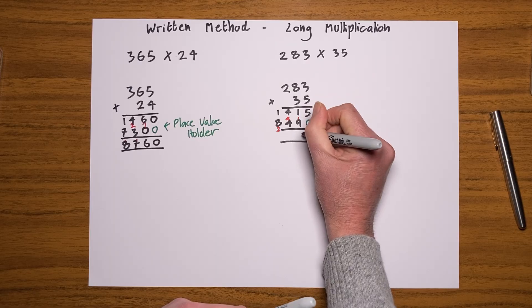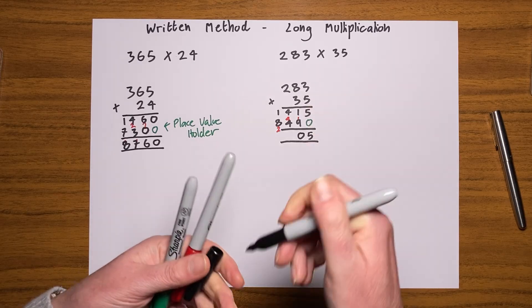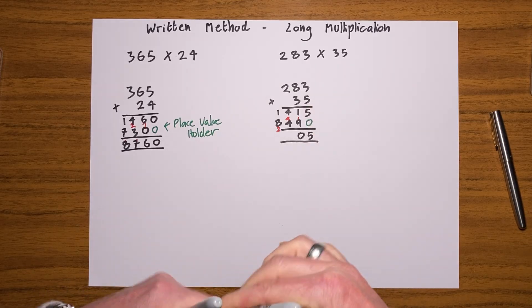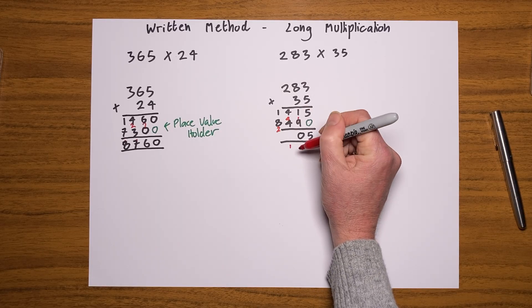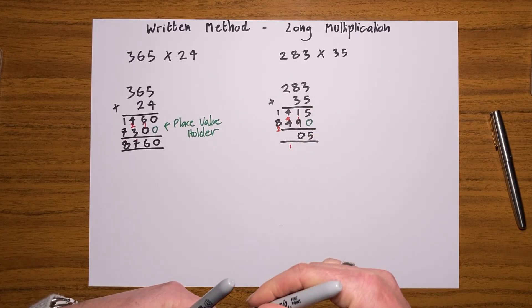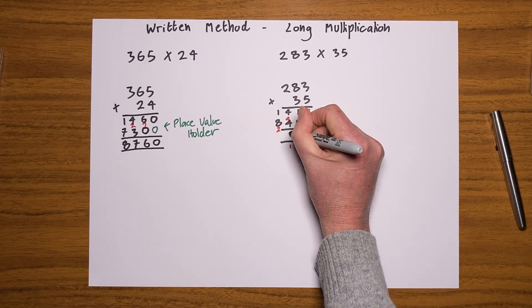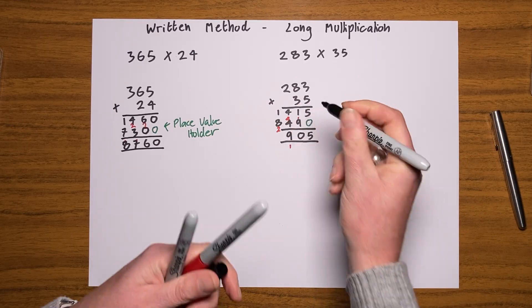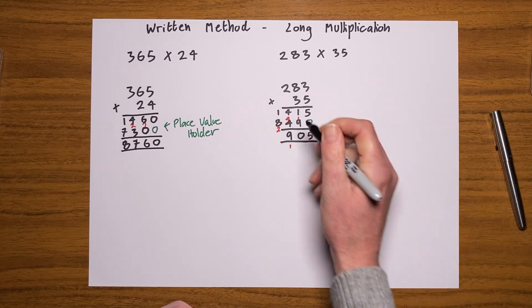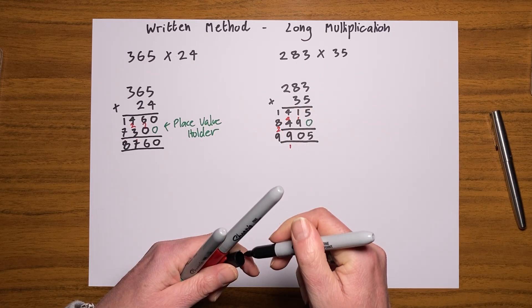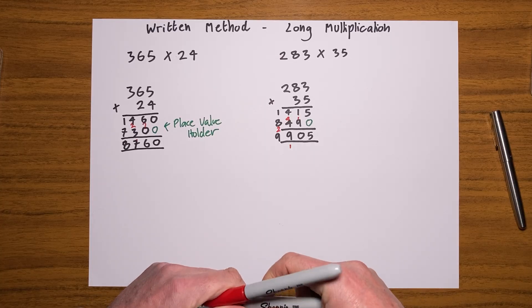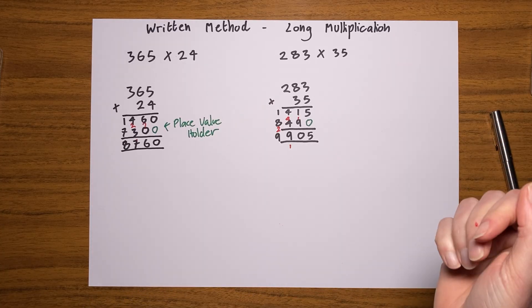And then I'm done with this line. Last thing to do, simply add these up together. Five and zero is five, nine and one is ten, so put my zero here and carry the 10 over. Four and four is eight, add one is nine, and eight and one is nine. So I get 9,905.